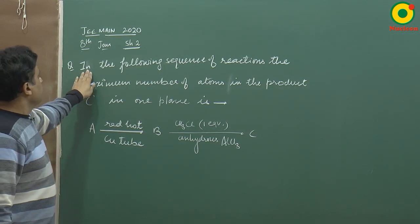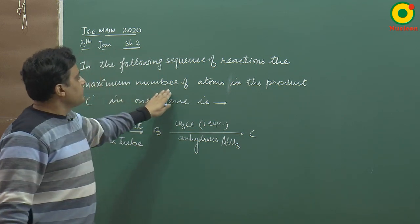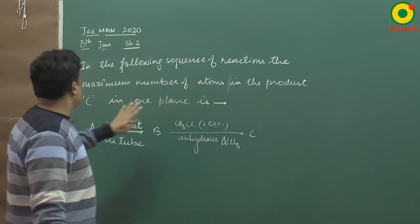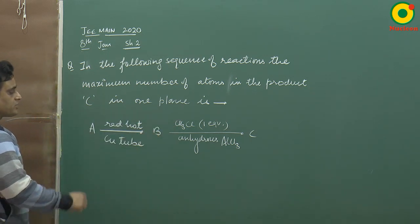In the following sequence of reactions, the maximum number of atoms in the product C in one plane is—what is the reaction of the sequence?